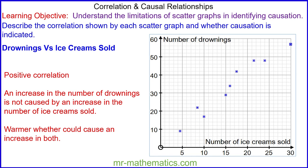However, an increase in the number of drownings is not caused by an increase in the number of ice creams sold. Warmer weather could cause an increase in both. So although it shows correlation, causation is not implied.